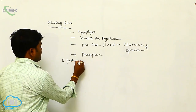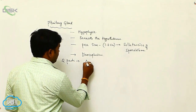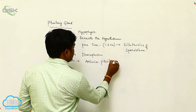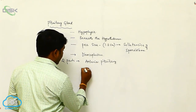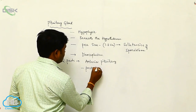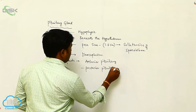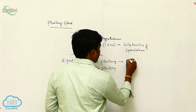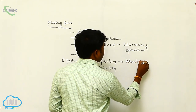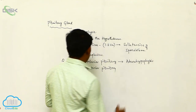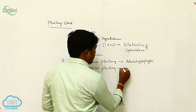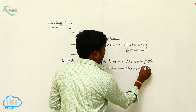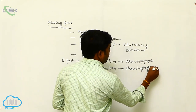The first part is the anterior pituitary, also called adenohypophysis. The second part is the posterior pituitary, also called neurohypophysis.